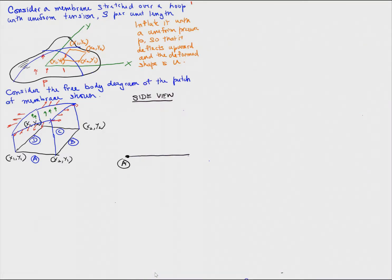Now let's look at a side view, so that the sides A and C are going in and out of the plane of the paper, and we're looking at the edge B. And if we look at the free body diagram in this view, we have the tension and the slope of the membrane at the two ends, and we have the pressure, of course.